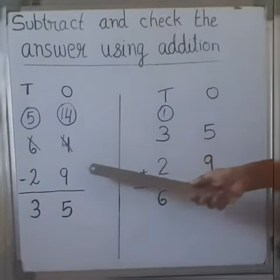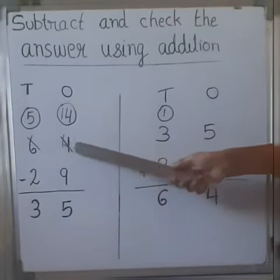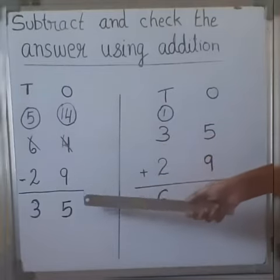64 minus 29. 4 minus 9 is not possible, so we will take 1 from there and make it into 14. 14 minus 9, 5 is the answer.